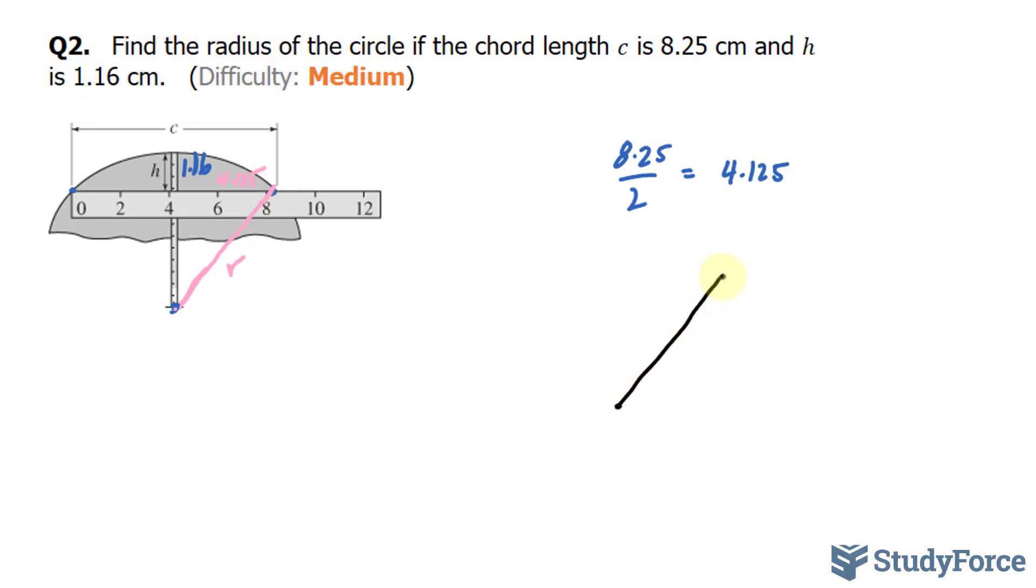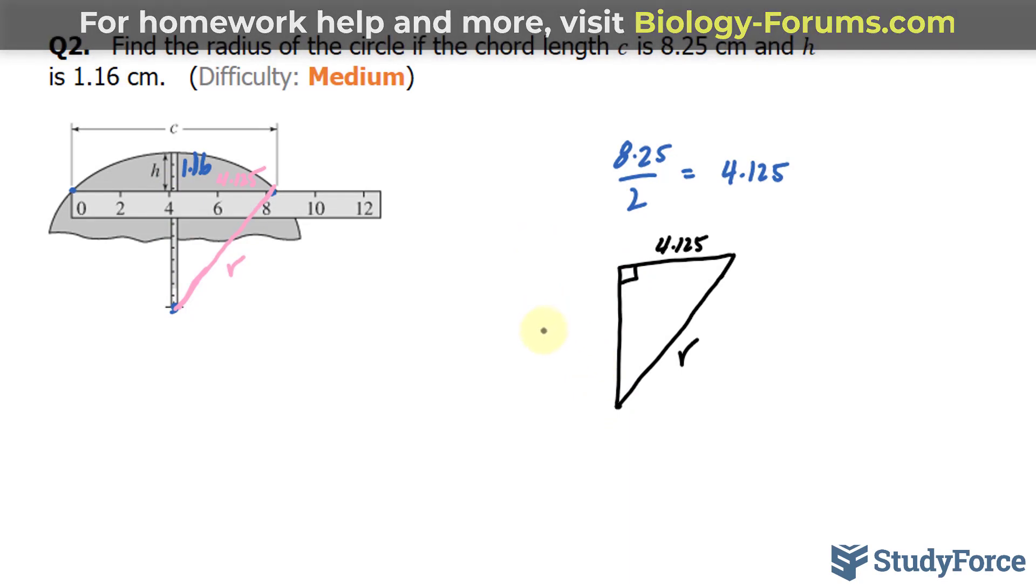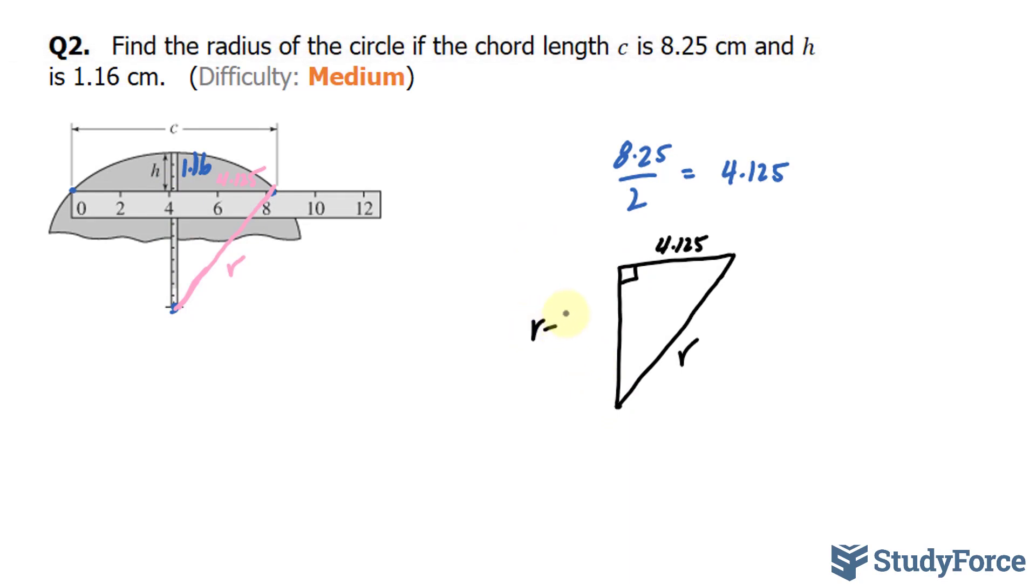We have a triangle of hypotenuse r, and it's a right triangle where the length from the right angle to this vertex is 4.125. We need one more piece of information to use the Pythagorean theorem. And what we can do is write an algebraic expression to represent the length from here to here. Notice that the radius is r from here to here, and 1.16 has already been taken away from the length of the radius which represents this line. So what I can write here is the radius minus 1.16.